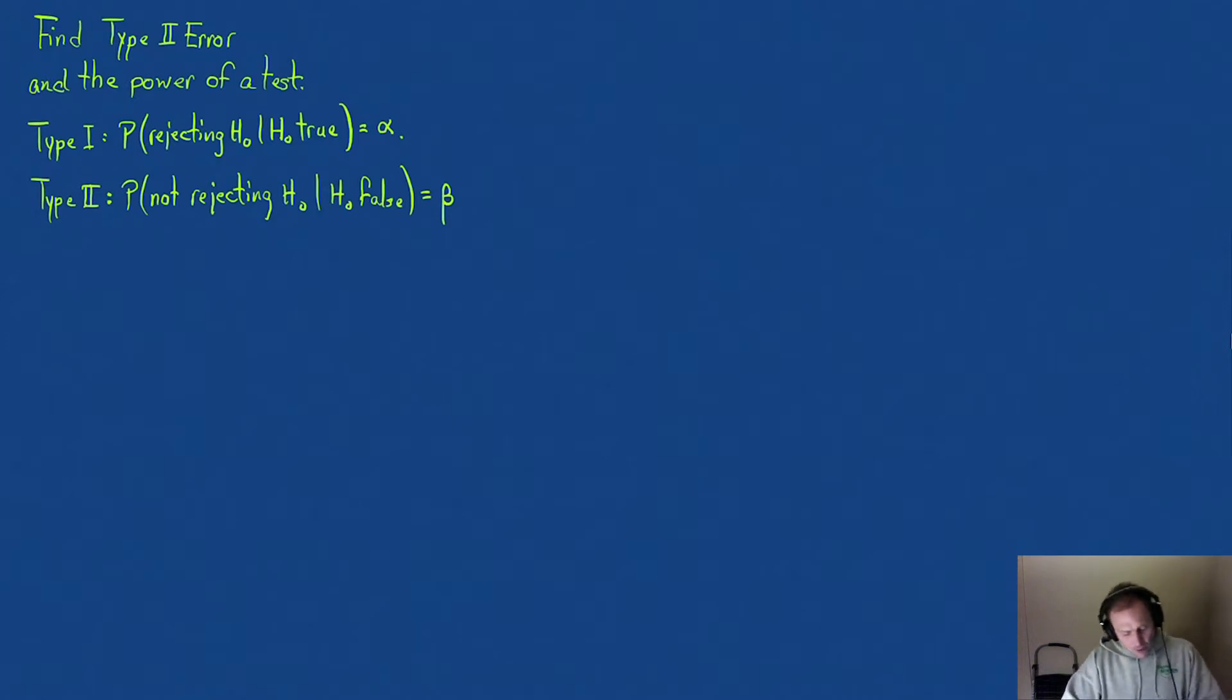What we really want is the power of a test. The power is the probability of rejecting the null hypothesis when the null hypothesis is false, because that's really something that we would hope happens. Notice the power is just 1 minus beta.